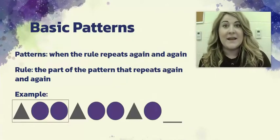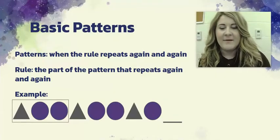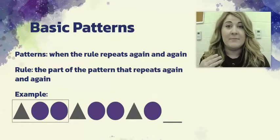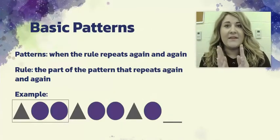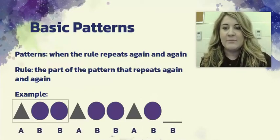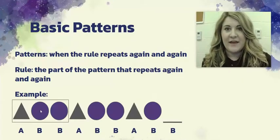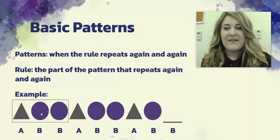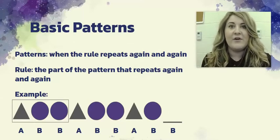The next thing I like to do is label the pattern with letters of the alphabet. The first shape is A and the second shape is B. We have one gray triangle — that's A — and then the purple circles are all B's. So this is what we call an ABB pattern: A, then B, then B again since it's the same shape. Then the rule stops and the pattern starts over.